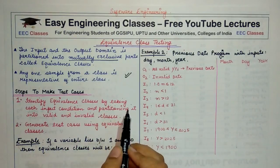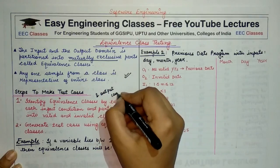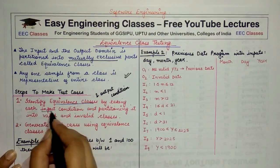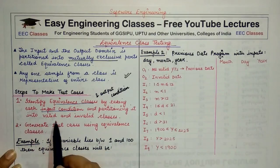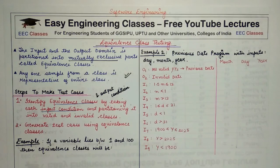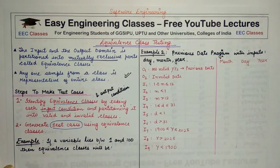In equivalence class testing, there are two major steps. First, identify different equivalence classes based on input conditions as well as output conditions. Then partition these classes into valid and invalid classes. Once you know the valid and invalid ranges, you will understand how to decide the equivalence classes. The second step is to generate test cases from those equivalence classes.